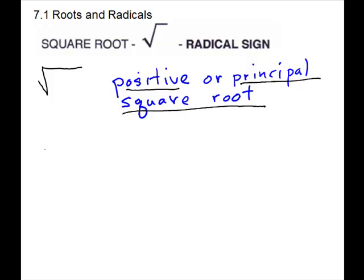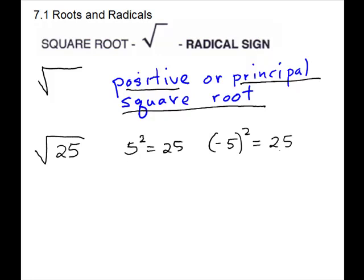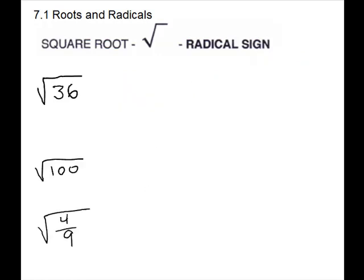Let's think for a second. If we're looking at the square root of 25, this is asking what goes times itself twice to give 25. Well, 5 squared gives 25, and negative 5 squared gives 25. Both of these will give 25. When we use the square root symbol, we want the positive square root, so we want the 5. If we wanted the negative square root, we would put a negative on the outside of the radical symbol. Let's look at some simple square roots.